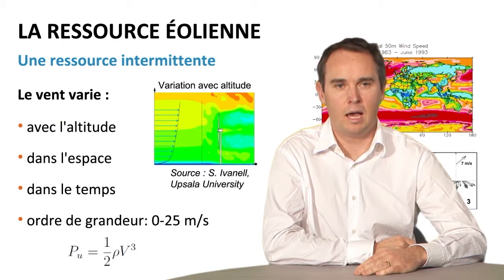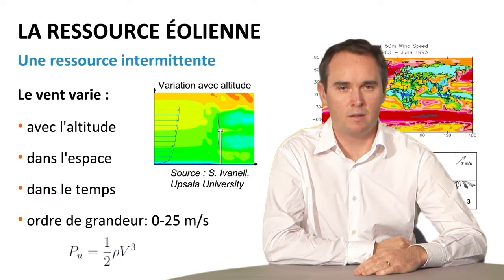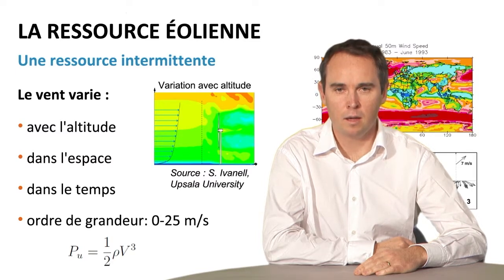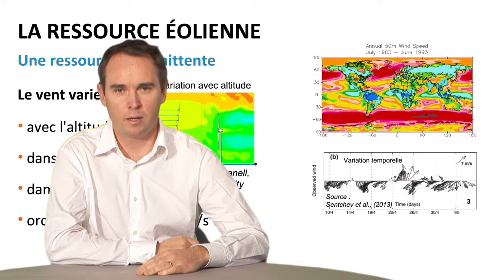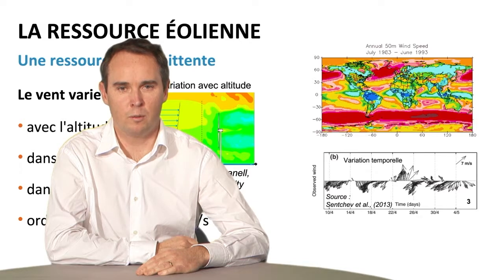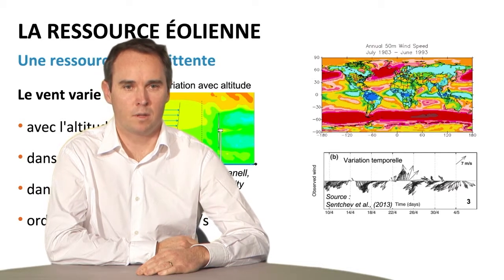The wind resource is characterized by the fact that it is intermittent. Wind varies in time, with altitude and space. Altitude variation is illustrated by the left-hand side graph — we can see that the wind decreases when we come closer to the ocean surface, associated with friction when the wind runs on the water surface. On the right-hand side, we see the average wind speed over 10 years at an altitude of 50 meters, showing the main types of climate: the low pressure system at high and average altitude in red, and the trade wind systems at tropical latitudes in pink.